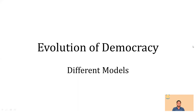Hello, students. In this series, we are going to have a look at the evolution of democracy. Specifically, we are going to look at the different models of democracy. In particular, we are going to talk about direct democracy and indirect democracy — what exactly we mean by each. We are going to look at these two core concepts in this particular lecture. Let's begin.